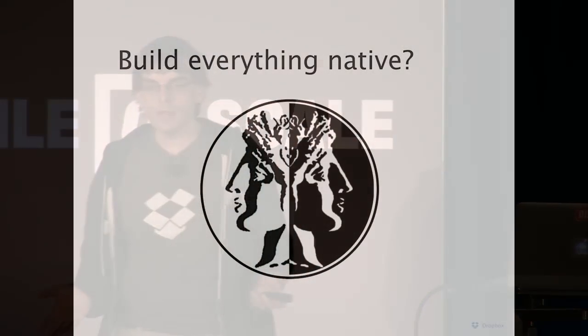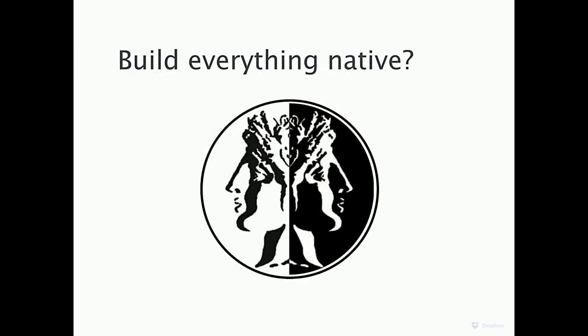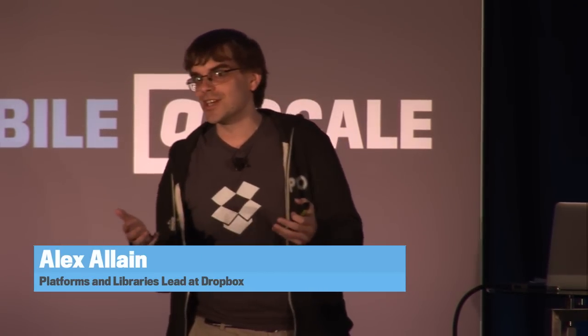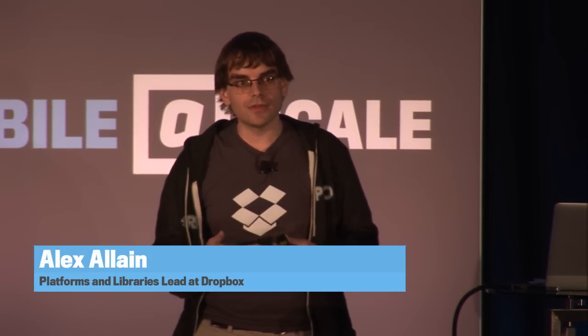There are a couple of approaches you could consider. One is build everything native. We've done that with our Dropbox core app — the file system view on your phone showing all your files. That's written once for iOS and once for Android. The downside is a lot of code done twice with the same logic across platforms, the same bugs, and a ton of communication overhead between team members. You end up with inconsistencies at all layers, even down to architecture design, so someone new has to work across two languages and two architectures.